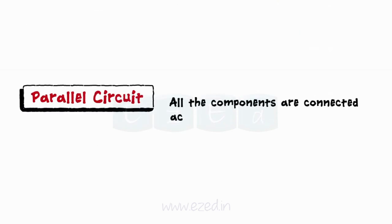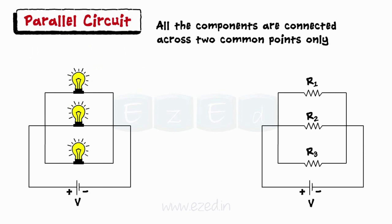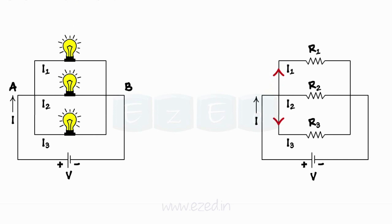The circuit in which all the components are connected across two common points only is called a parallel circuit. Here, all three bulbs are connected across the two points A and B forming the parallel structure. Thus, in the parallel circuit, current has multiple parallel paths to flow.